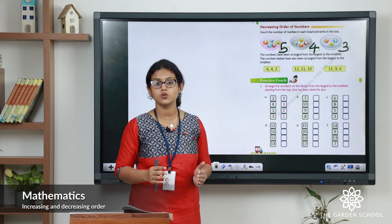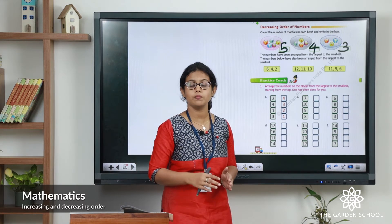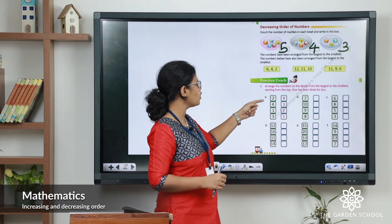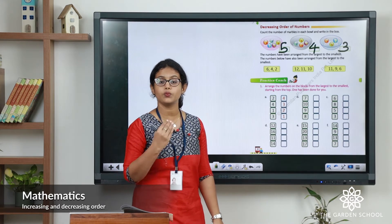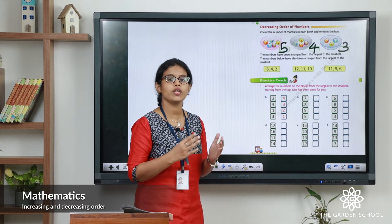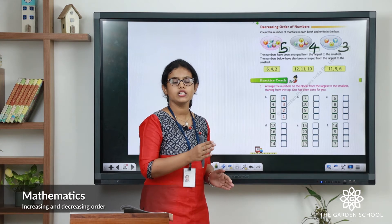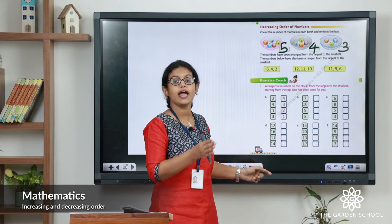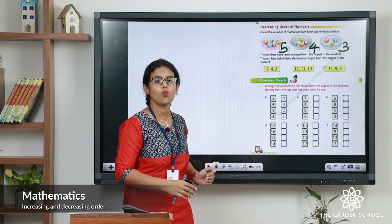Now let's do the exercise. In the first question, you have to arrange the numbers from largest to smallest: two, four, one, three. You have to arrange in decreasing order. When we do backward counting: five, four, three, two, one. So the correct order is four, three, two, one. That is in decreasing order.